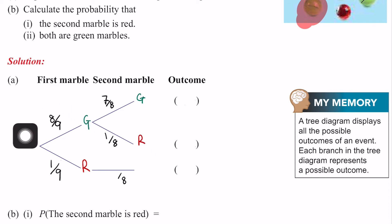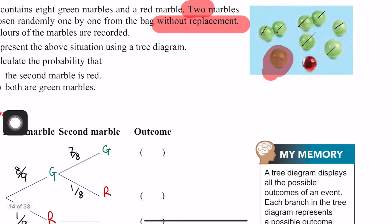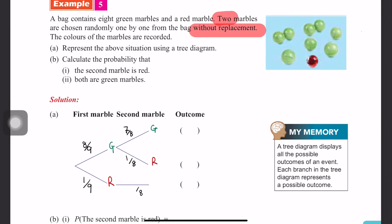Okay. Now what about the case if the first time, I already pulled out red. I already pulled out red. So now what's left for the second draw? Red is gone. So only green is left.